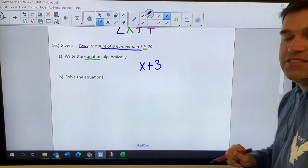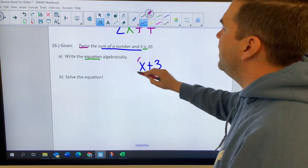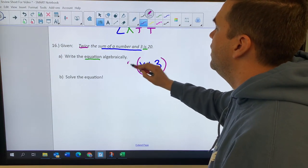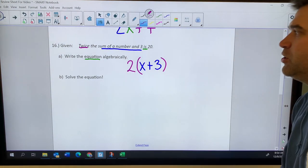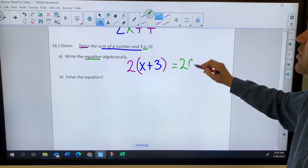If you use N instead, you're just fine. You can use any variable you would like. And then after I find that sum, I need to double it. So that means multiply it by two. And then the is equals 20.